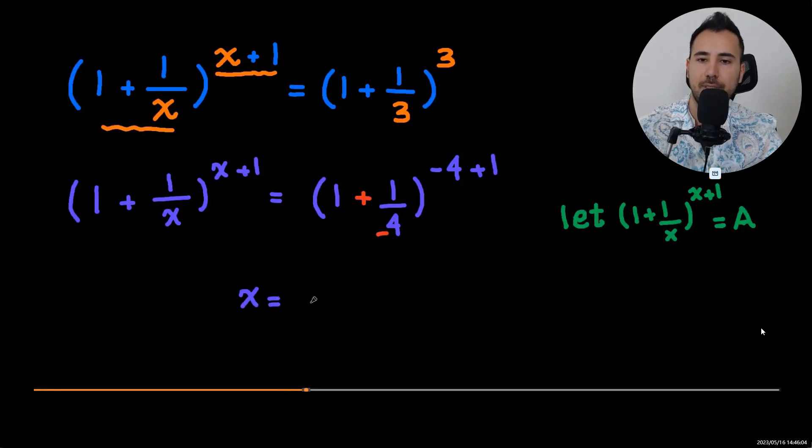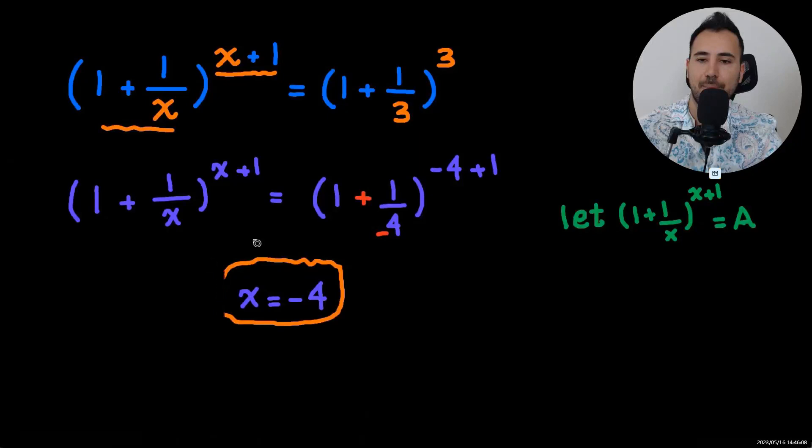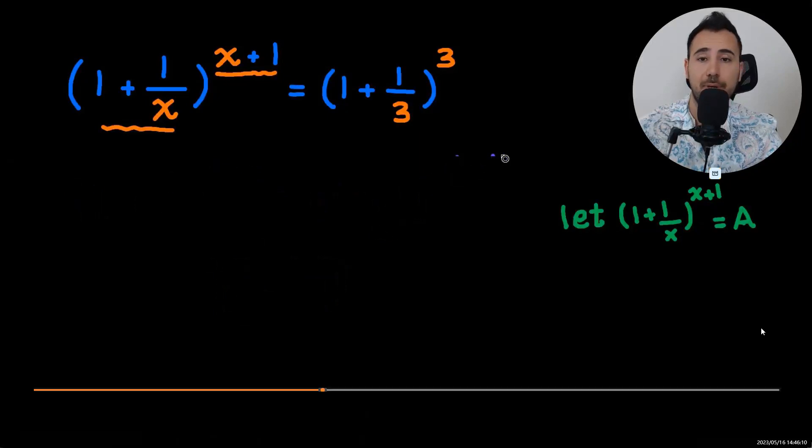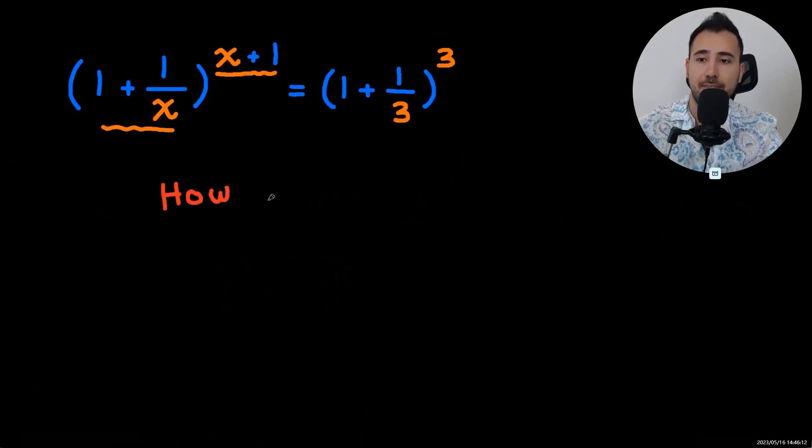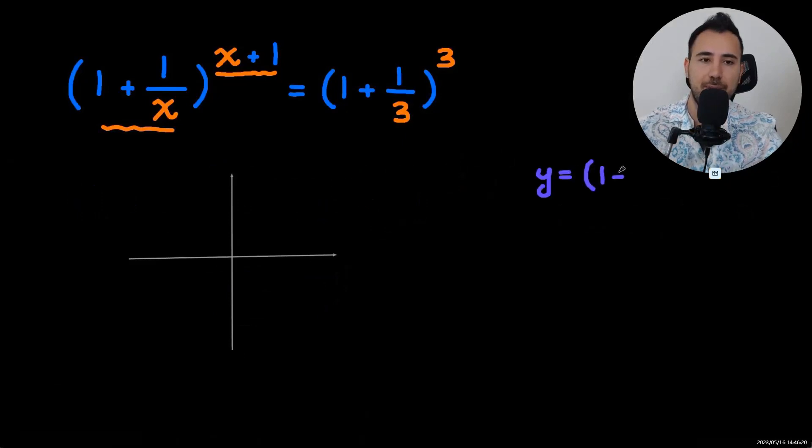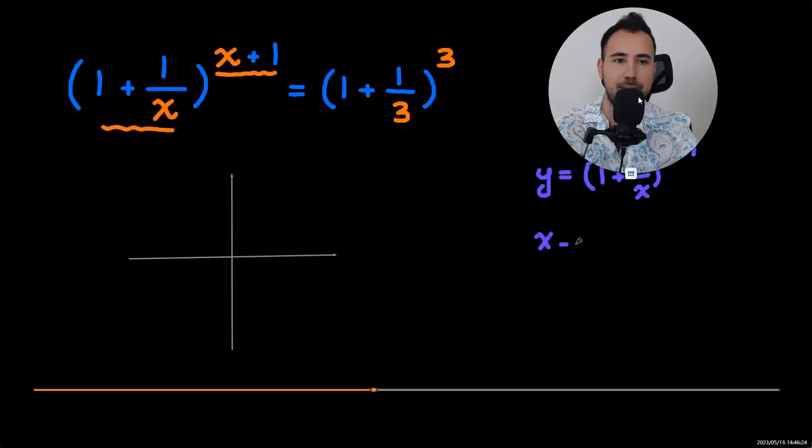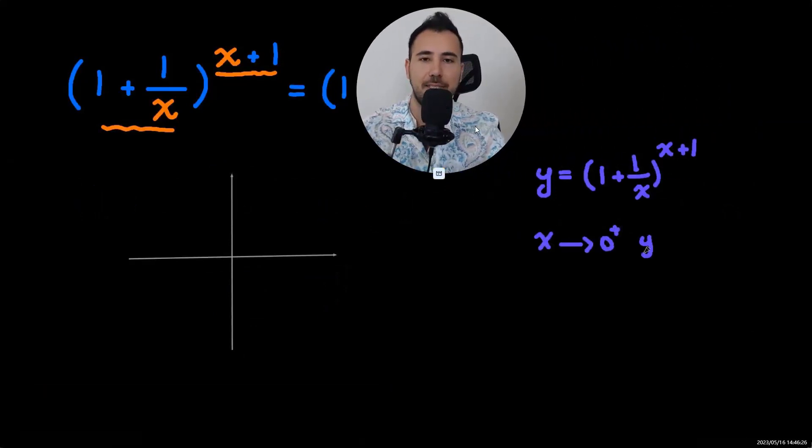And now by comparison you see that the value of x is negative four. Now it's time for the promised question. My question: we just need to see how many solutions there are to this equation. To do that we're going to draw it.